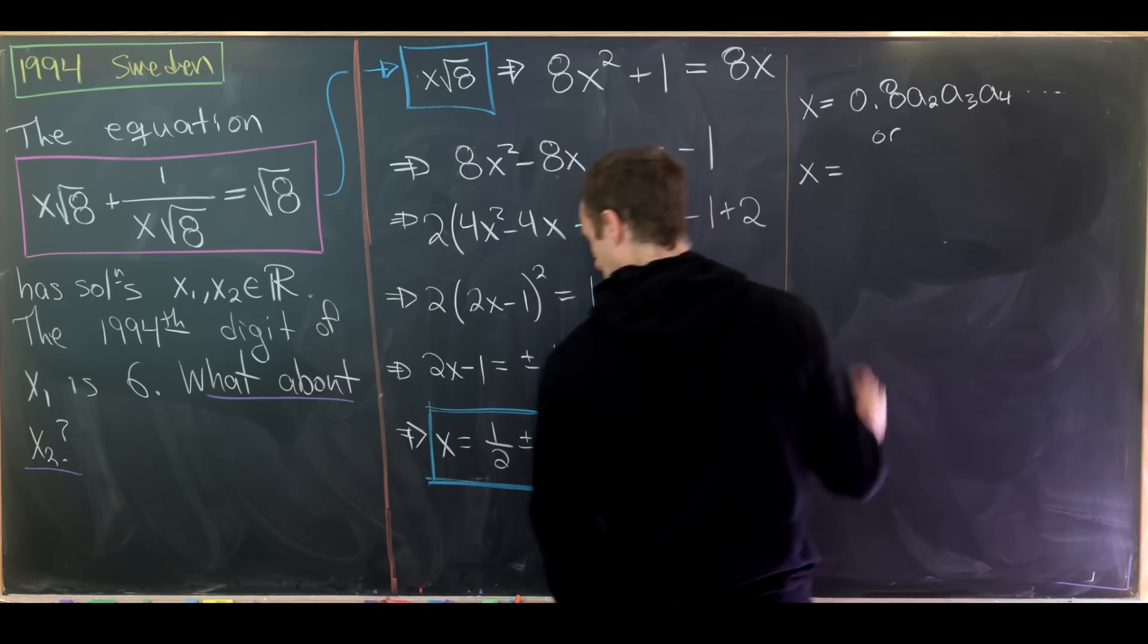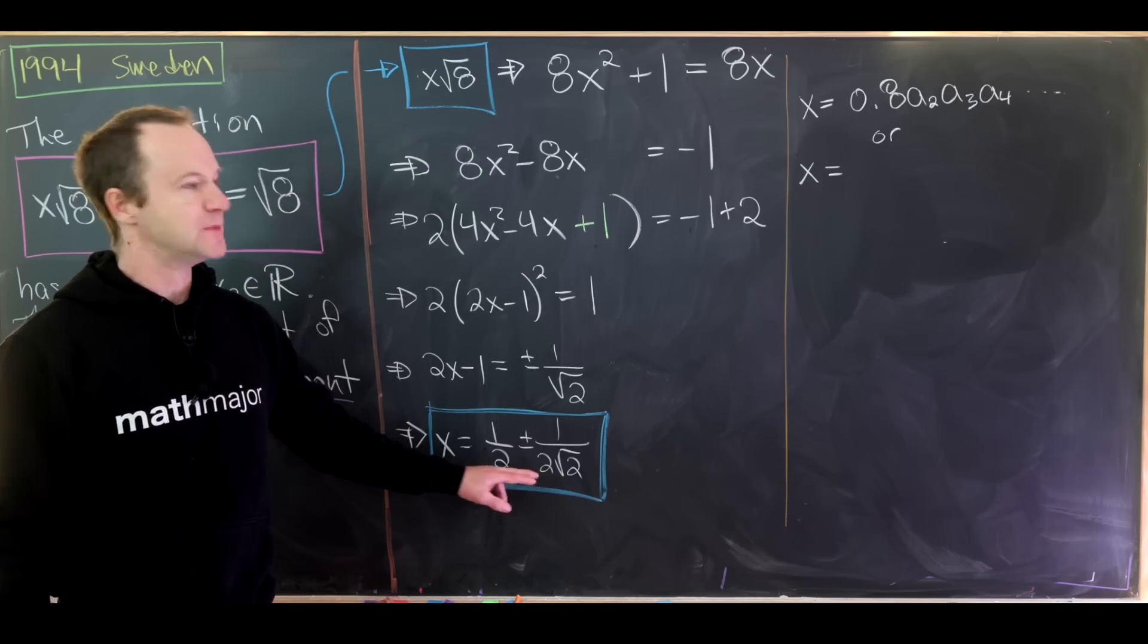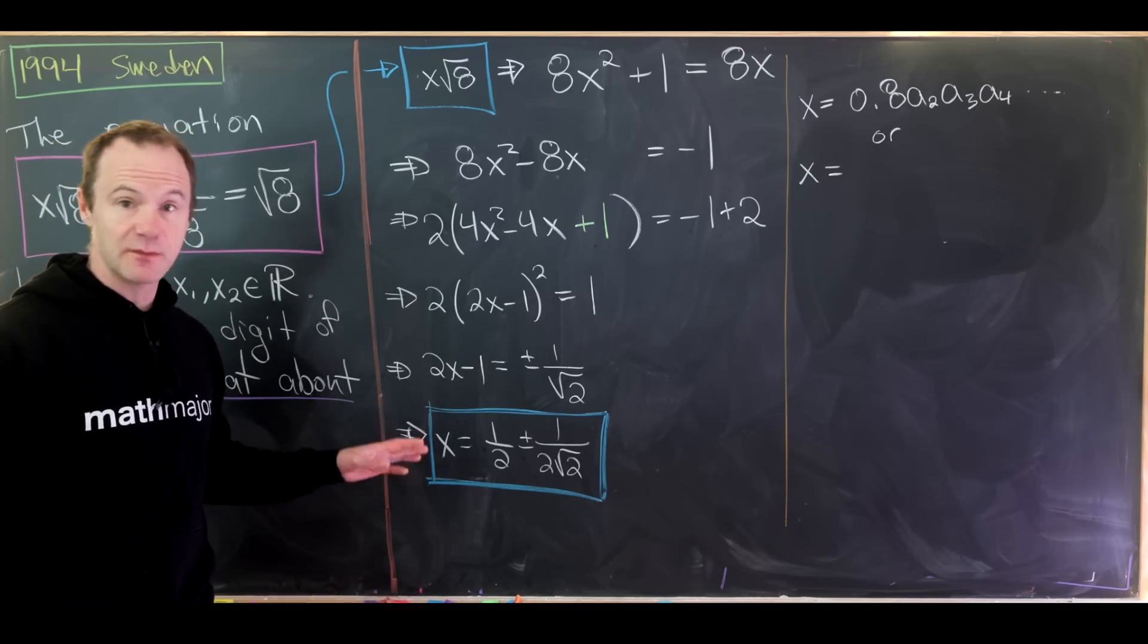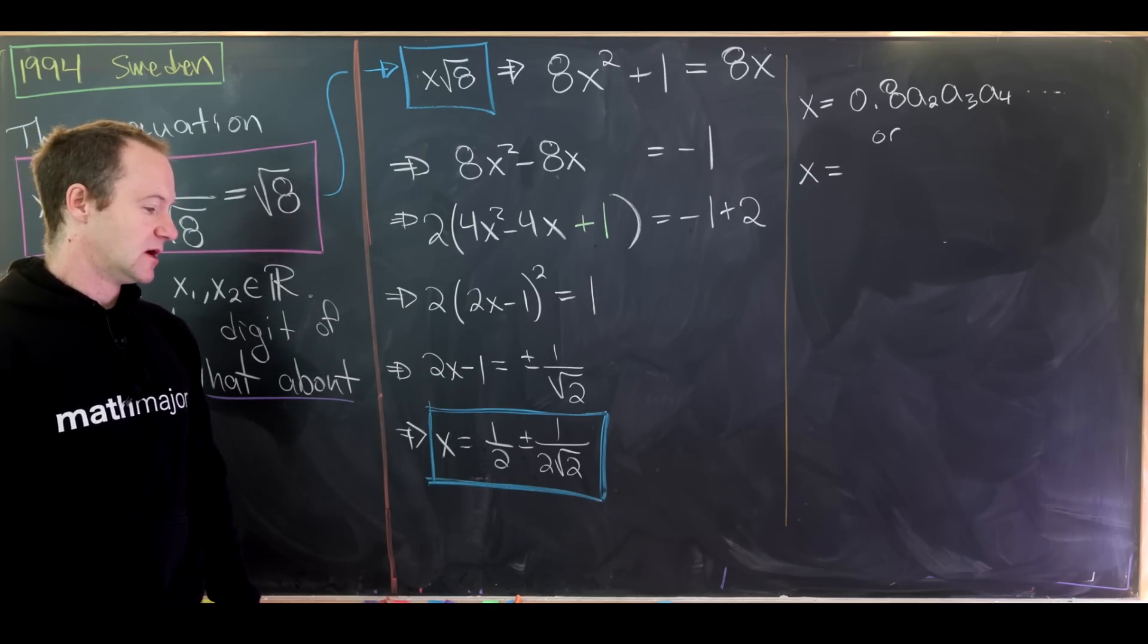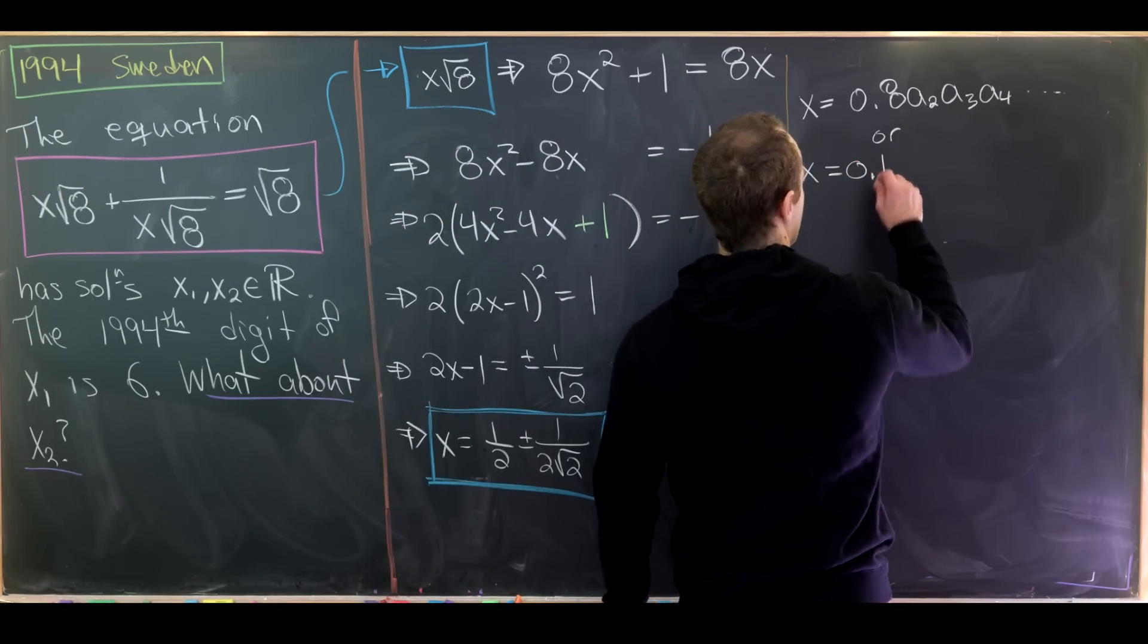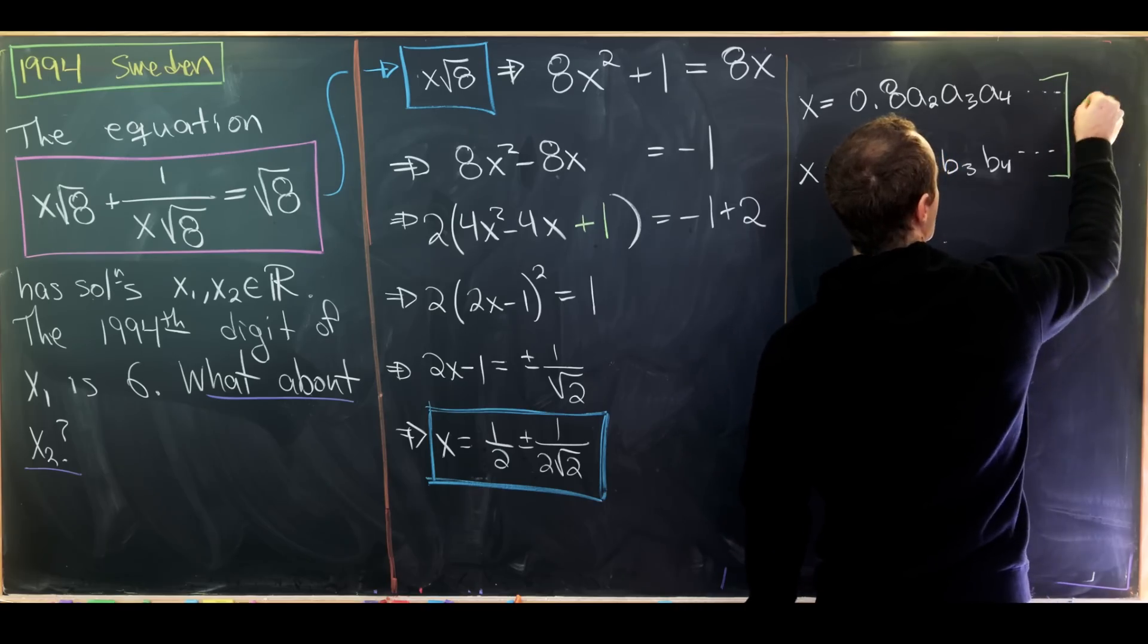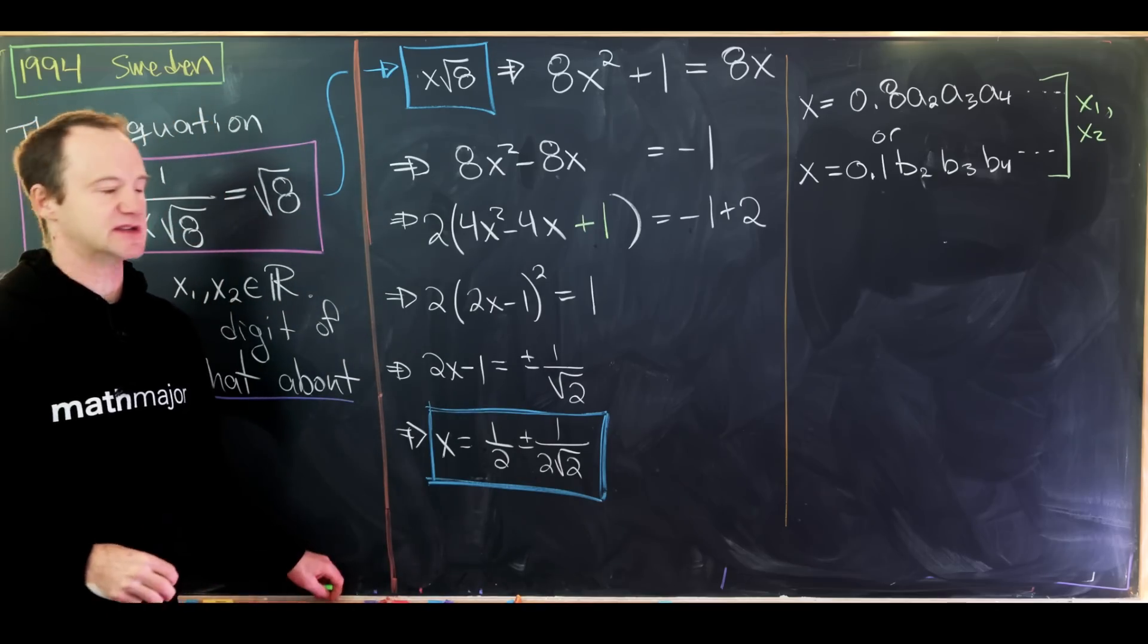Our second solution comes from one half minus 1 over something that's a little bit less than 3. In other words, it's one half minus something a little bit bigger than one third. We know it's a little bit bigger than one third just by taking the reciprocal of something that's a little less than 3. That gives us our first digit over here of 0.1, and then we'll have b2, b3, b4, and so on. I'd like to reiterate that we don't know which one of these is x1 and which one is x2, but x1 is one of them and x2 is the other one.